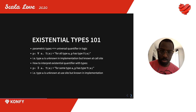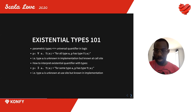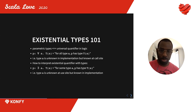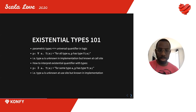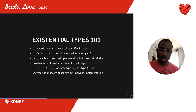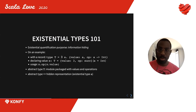Instead, if I use existential quantification — 'for some type A, expression P has type T of A' — the type A will be known when implementing or creating a value of that type, and the implementation will depend on A. But at the call site, you won't be able to know type A. That's the key difference between universal and existential quantification.